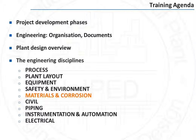The role of the materials and corrosion discipline is first of all to select the material of construction of all plant equipment and lines, then to specify the adequate coating to resist external corrosion, and lastly to design the plant corrosion monitoring system.